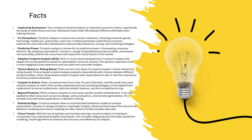The advanced technique for handling complex datasets in conjoint analysis is hierarchical Bayesian modeling, along with choice-based approaches. With the rise of big data and machine learning, conjoint analysis is evolving to incorporate advanced analytic techniques, integrating real-time data, predictive modeling, and AI algorithms to enhance accuracy and efficiency. I hope you enjoyed this conjoint analysis concept and practical overview — please subscribe to the channel for more details.